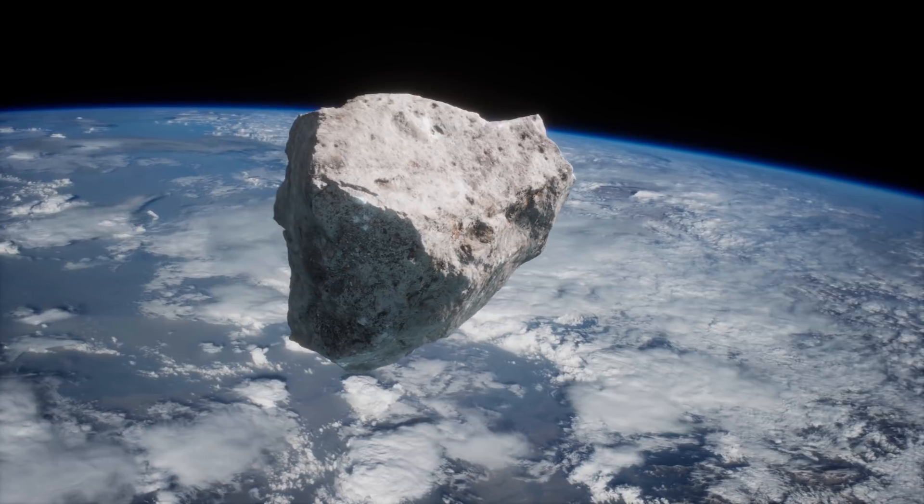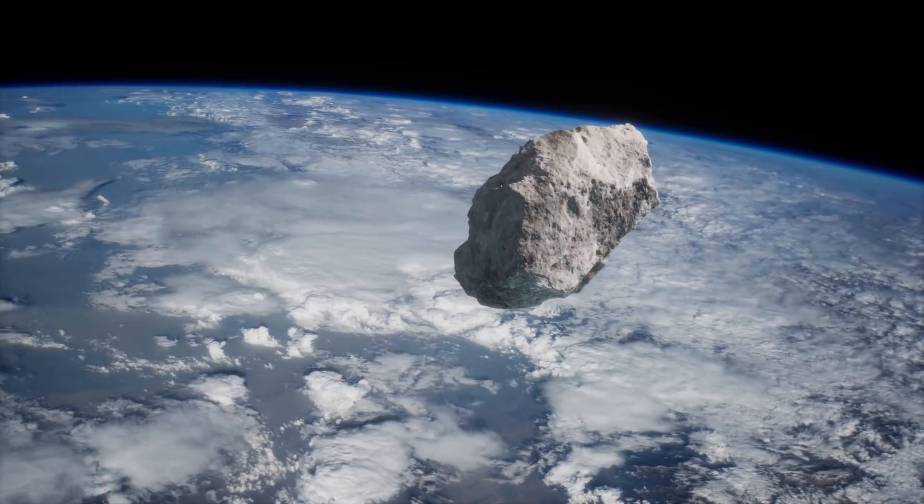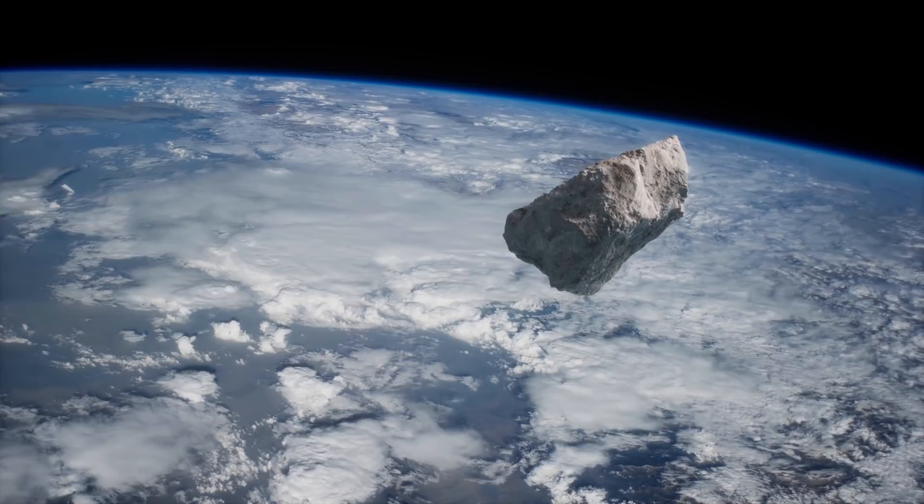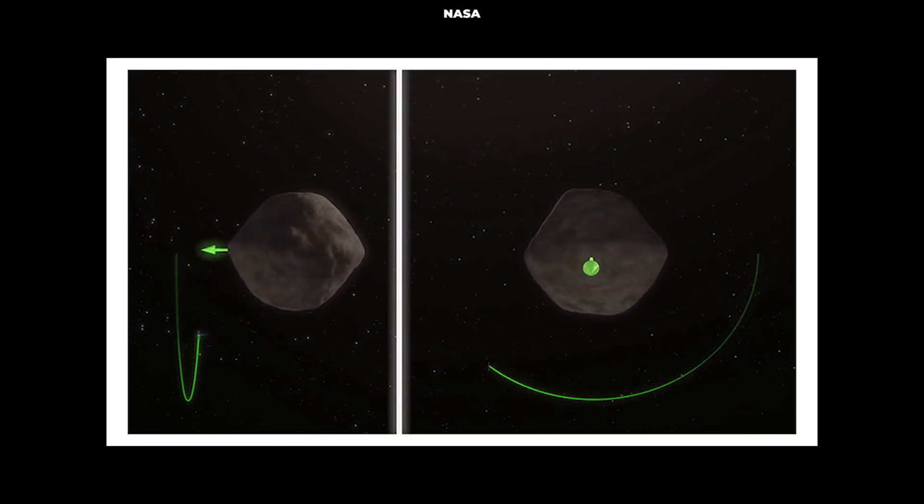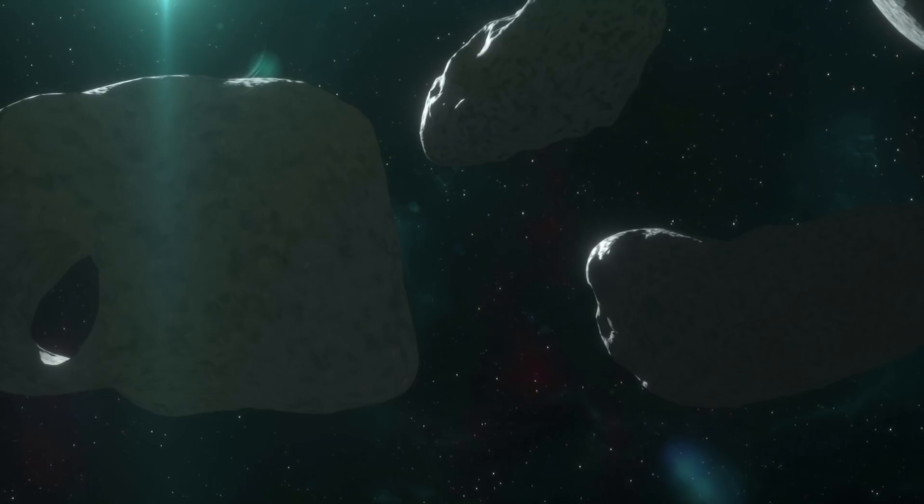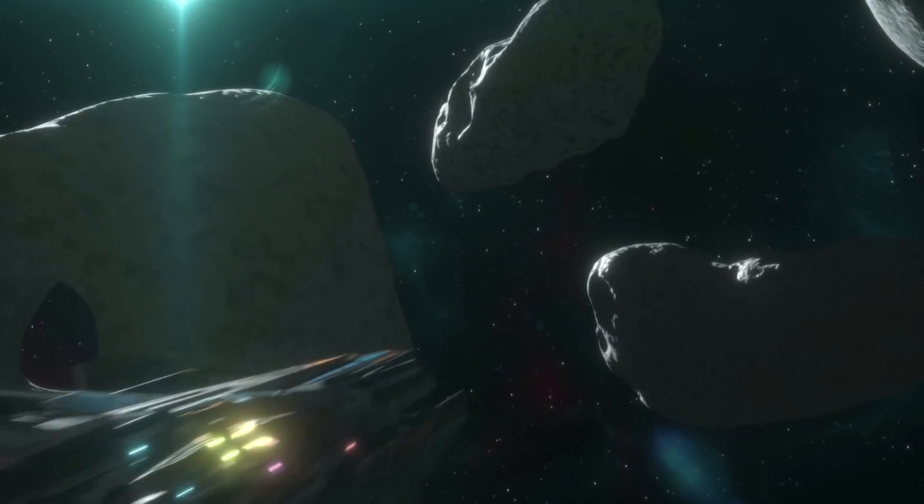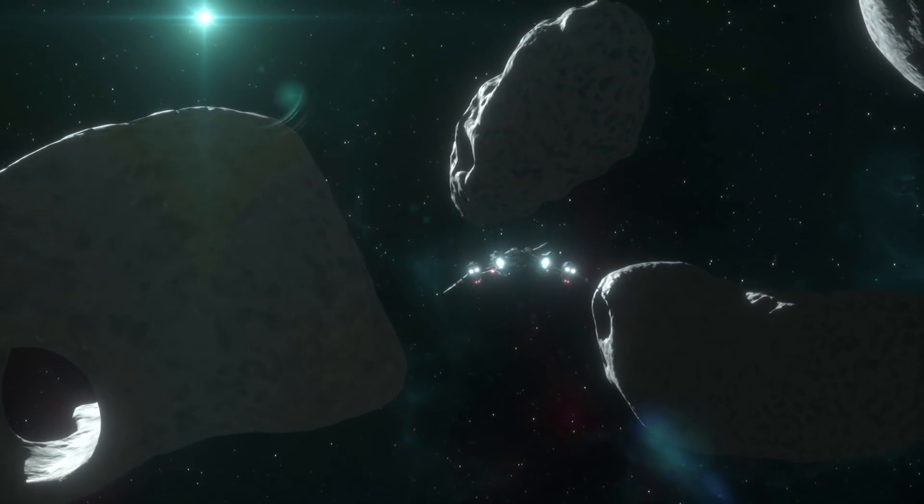Engineers around the globe are developing ideas about how to deflect dangerous asteroids from our planet. They are working on concepts that range from gravitational tugs to kinetic impactors that would knock an incoming rock off course.